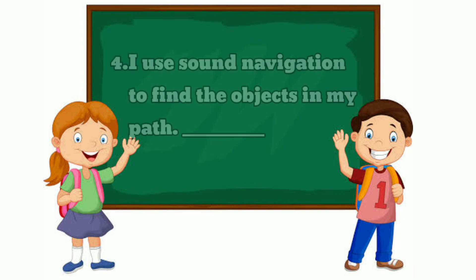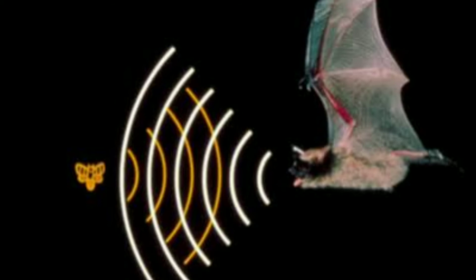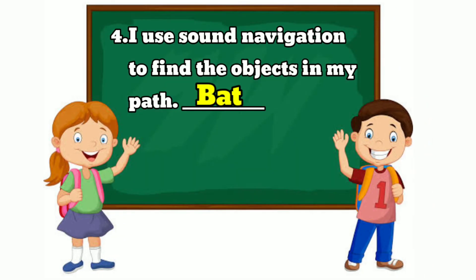Fourth one: I use sound navigation to find the objects in my path — ennathu paadayil ullu purulgalaik kandu pidikke me uliyei pine paduttu veen. Yes children, bats produce ultrasonic sound which helps them find their way at night and find out the objects on their path. So the answer is bat — vawal. We have to fill in the blank: bat.